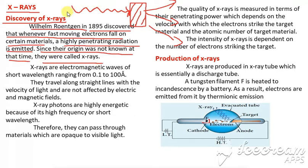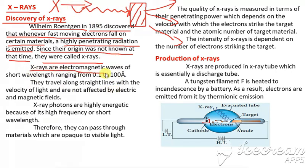Since the origin was not known at the time, they were called as X-rays — the name X representing the unknown origin. That is why X-rays are electromagnetic waves of very short wavelength.